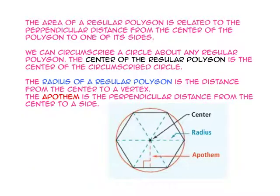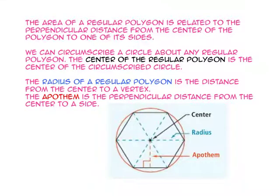The area of a regular polygon is related to the perpendicular distance from the center of the polygon to one of its sides. We can circumscribe a circle about any regular polygon. The center of the regular polygon is also the center of the circumscribed circle. The radius of the regular polygon is the distance from the center to a vertex. The apothem is the perpendicular distance from the center to the side.